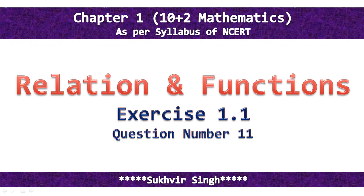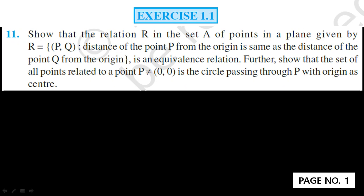Welcome to today's lecture of mathematics. I am going to discuss question number 11 of exercise 1.1. The statement says: show that the relation R in a set A of points in a plane, given by R equals the set of pairs (P,Q) such that the distance of point P from the origin is the same as the distance of point Q from the origin, is an equivalence relation. Further show that the set of all points related to a point P not equal to (0,0) is a circle passing through P with origin as center.